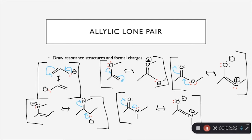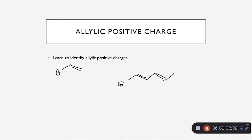The formal charges will change as you're pushing electrons throughout a molecule. There is another video on formal charges — if these two concepts are a little bit confusing, you can always go back and watch those previous videos. So now we're going to talk about an allylic positive charge. Allylic has the same definition: it's going to be one carbon over from a double bond, but in this case it's an allylic positive charge. We're always going to treat a positive charge like a hole that we can fill with electrons.